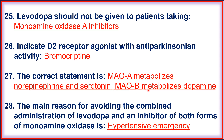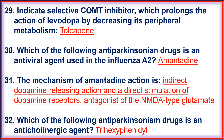Question twenty-eight: the main reason for avoiding the combined administration of levodopa and an inhibitor of both forms of monoamine oxidase is the risk of hypertensive emergencies. Question twenty-nine: the selective COMT inhibitor which prolongs the action of levodopa by decreasing its peripheral metabolism is tolcapone.